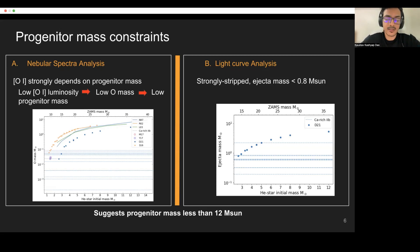We find that theoretical models find there's a very strong dependence of oxygen-1 forbidden line late-time nebular phase luminosity with the zero-age main sequence mass. For our sample, we find that the measured oxygen-1 luminosity gives oxygen mass which suggests that the progenitor mass is less than 12 solar mass.